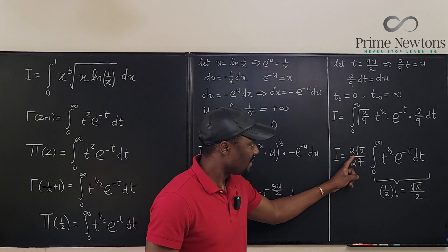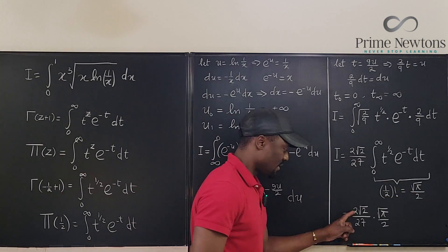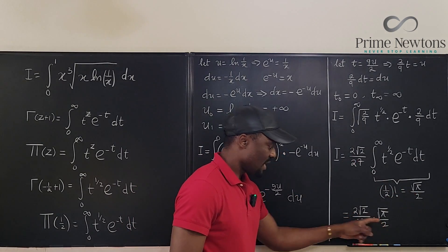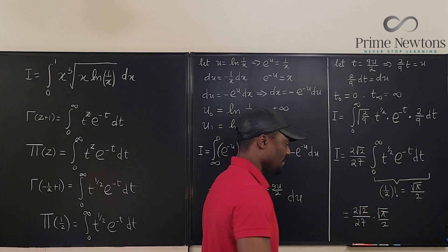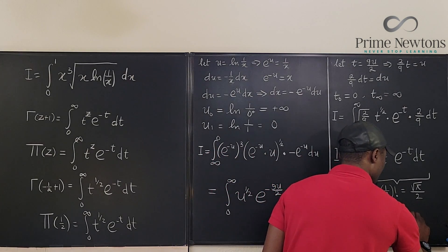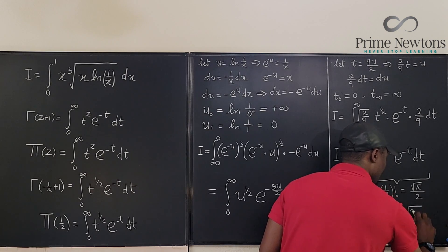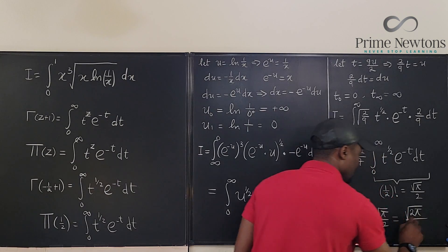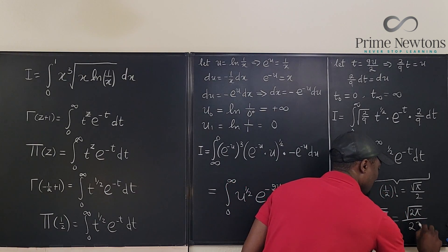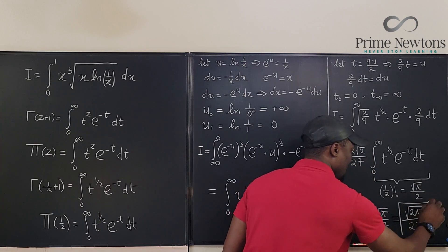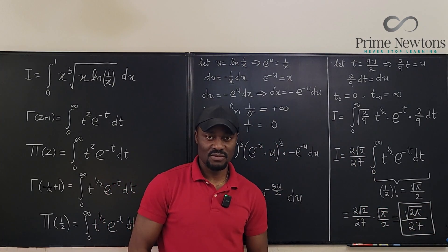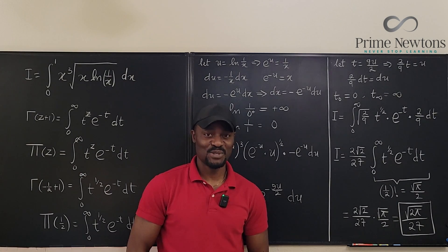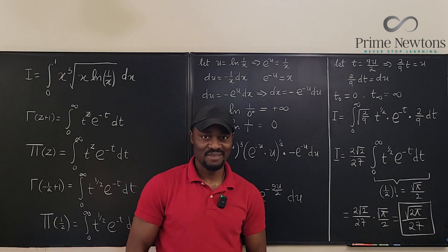Multiplying: the 2 in the numerator of 2 root 2 over 27 cancels the 2 in the denominator of root pi over 2. Combining the radicals gives root(2pi) over 27. This is the exact value of the definite integral. Never stop learning — those who stop learning stop living. Bye bye.